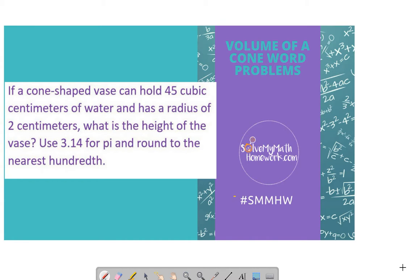Let's read the problem. We have a cone-shaped vase that can hold 45 cubic centimeters of water and has a radius of 2 centimeters. What's the height of this vase? Use 3.14 for pi and round to the nearest hundredth.